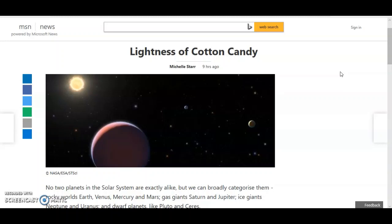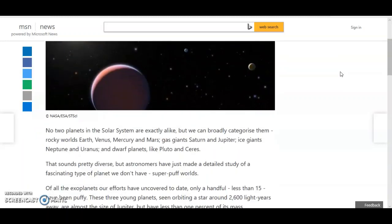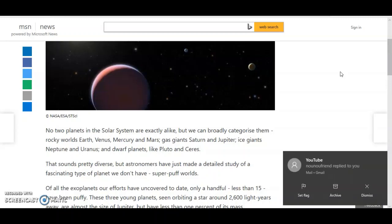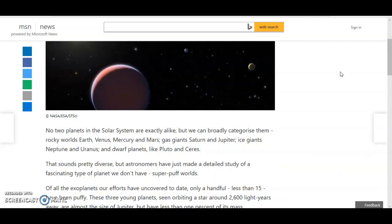Anyway, let's read the article. No two planets in the solar system are exactly alike, but we can broadly categorize them: rocky worlds like Venus, Mercury, and Mars; gas giants Saturn and Jupiter; ice giants Neptune and Uranus; and dwarf planets like Pluto and Ceres. That sounds pretty diverse, but astronomers have just made a detailed study of a fascinating type of planet we don't have - super puff.